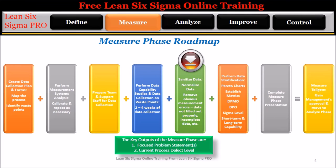Step 5: Sanitize the data — ensure that the data collected is good data. Step 6: Remove obvious measurement errors, data not filled out properly, incomplete data, etc. If the data collected is full of data collection errors, we call this type of data GIGO, which stands for garbage in, garbage out. This type of data should be thrown out. In this case, the team may need to collect more data. This can be avoided by actively checking on the data being collected on a daily basis.